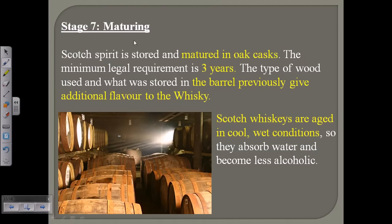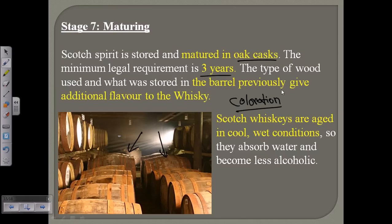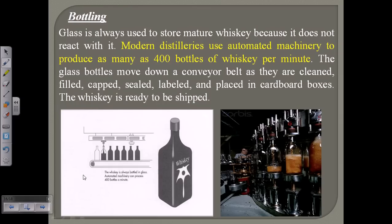The seventh stage is maturation. Scotch spirit is stored and matured in oak casks — wooden barrels — placed usually in dark, cool, and moist regions so they absorb water and become less alcoholic. The usual Scotch whisky requires at least three years of aging. During this processing, oak barrels add extra flavor to the whisky, and importantly, the golden yellow or dark brown coloration we observe in whisky is achieved during this aging period.